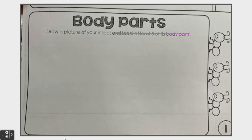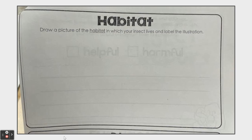On the next page, it's talking about the insect habitat. Draw a picture of the habitat in which your insect lives and label the illustration. So, in the real world, where would your insect live? Or, if you'd like, you could draw an example of the habitat that was in our classroom.